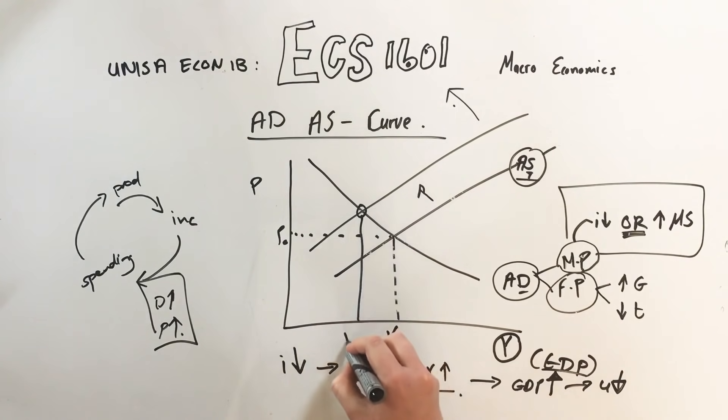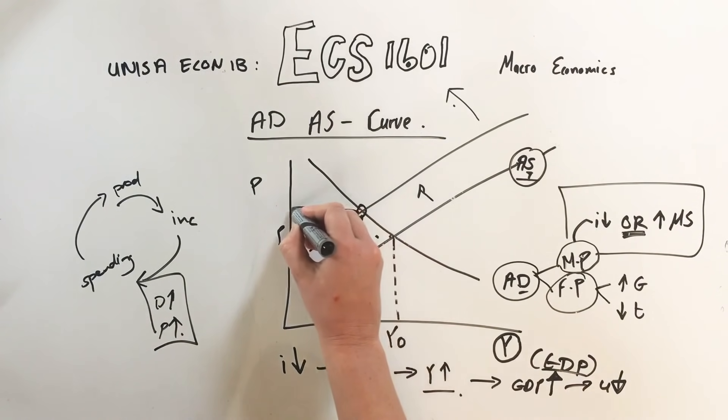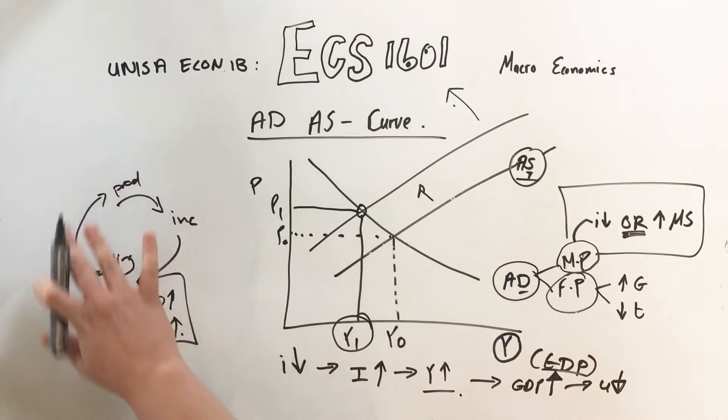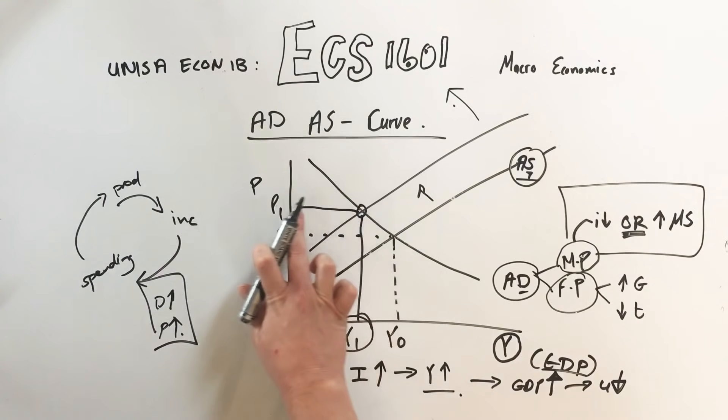If it goes this way, if the aggregate supply goes this way, it's terrible for the economy because the new equilibrium point, the output is less and the prices are higher. So there's less output, less things happening in the economy and the prices are higher, and that is called stagflation.